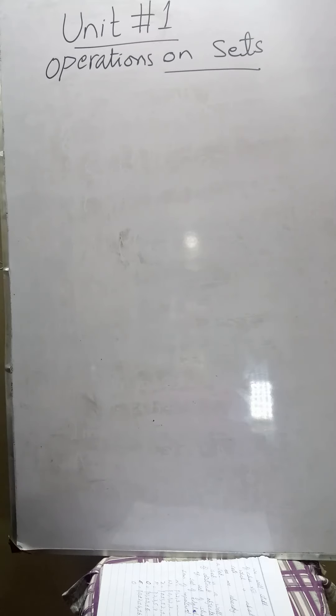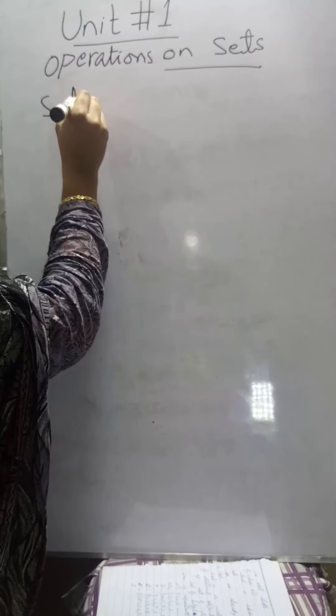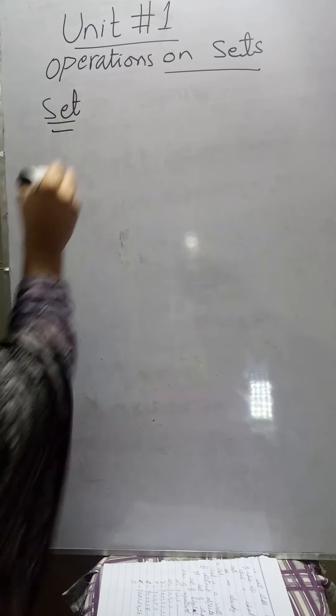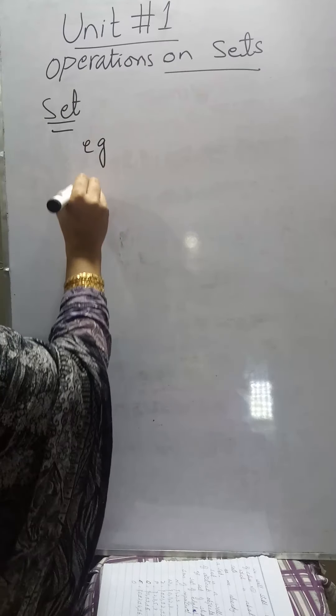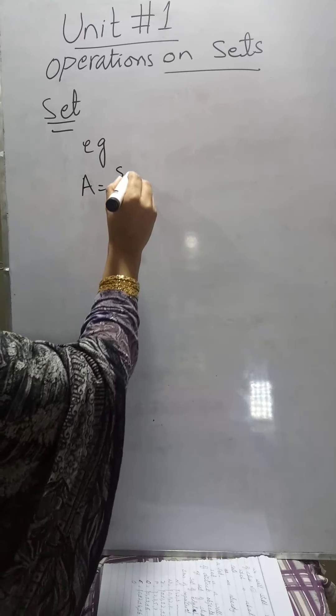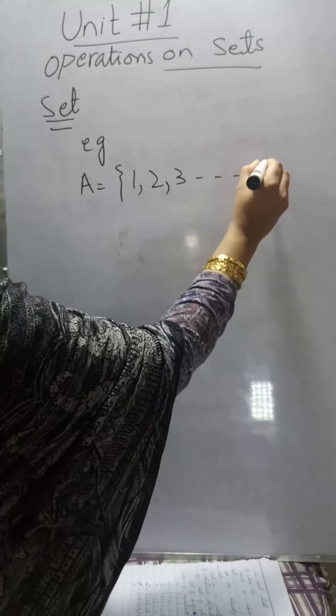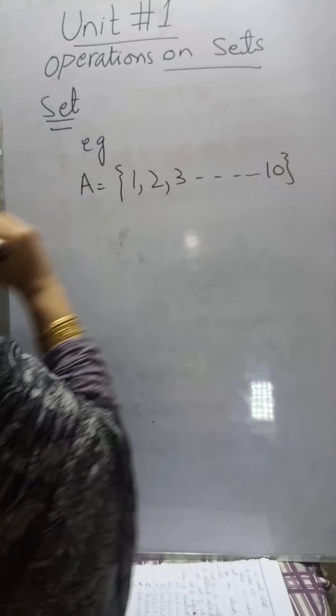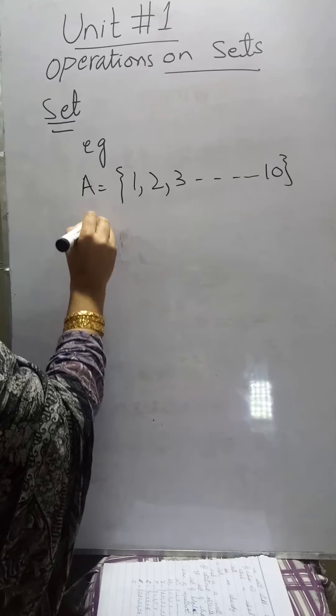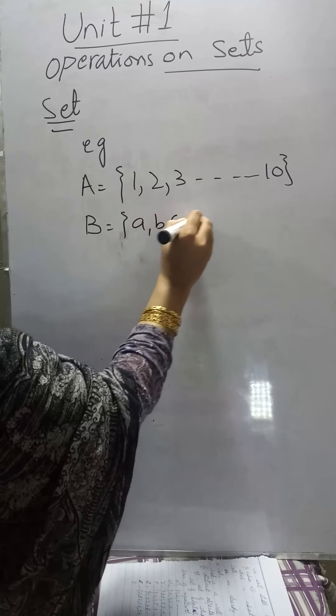A set is a well-defined collection of distinct objects. For example, A is equal to the set of first natural numbers, that is 1, 2, 3 up to 10. The set of English alphabets, B is equal to a, b, c up to z.